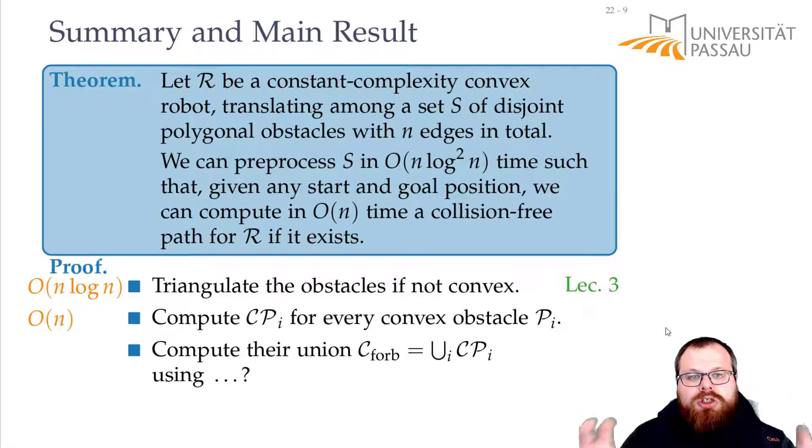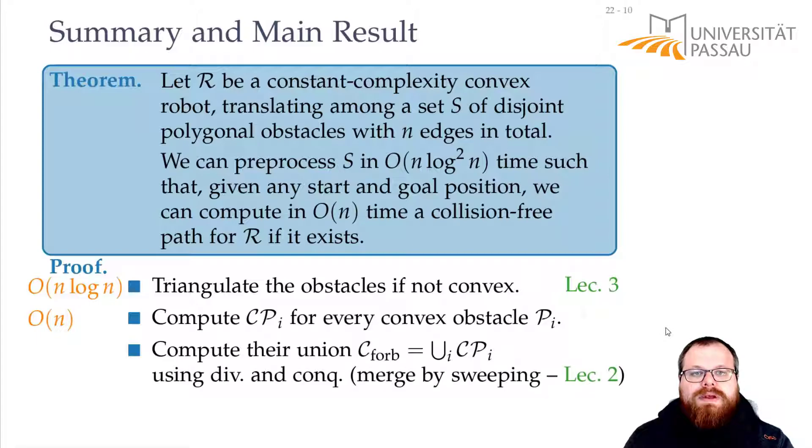Then, we get two shapes that are just polygons that are not convex. And for two non-convex polygons, we can compute their union using a sweep line algorithm. So, we basically merge our solution by sweeping.